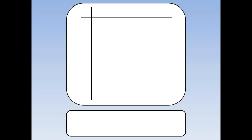Next I'm going to throw two dice, a red dice and a blue dice. When I throw the red dice I could get one, two, three, four, five, six. When I throw the blue dice I could get one, two, three, four, five, six.